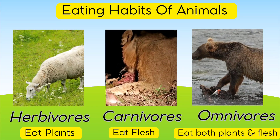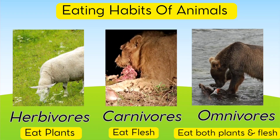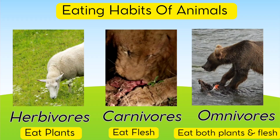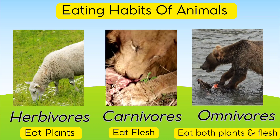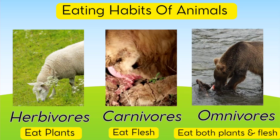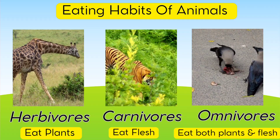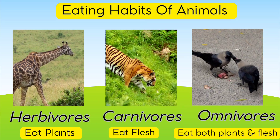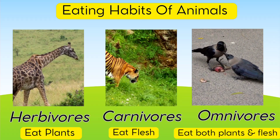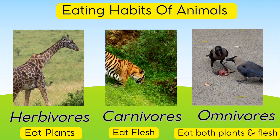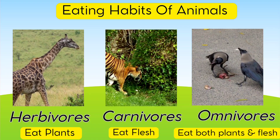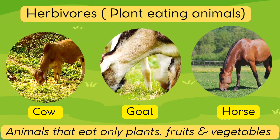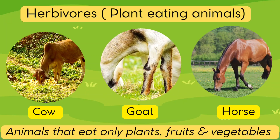Based on their eating habits, animals are divided into three groups: Herbivores, Carnivores and Omnivores. Herbivores are animals that eat only plants. Carnivores are animals that eat only flesh. And omnivores are animals that eat both plants and flesh. Now let's learn in detail about these three groups of animals.